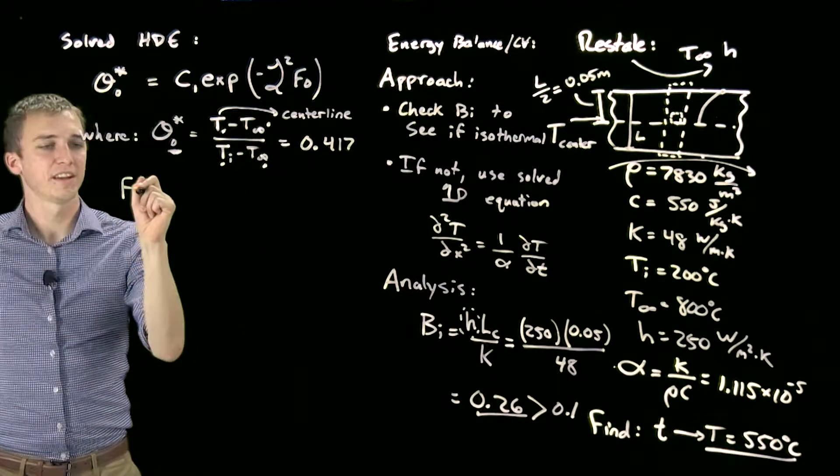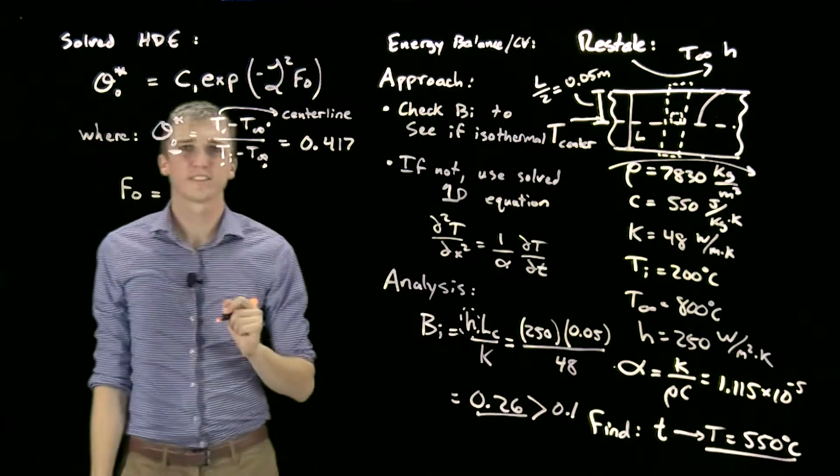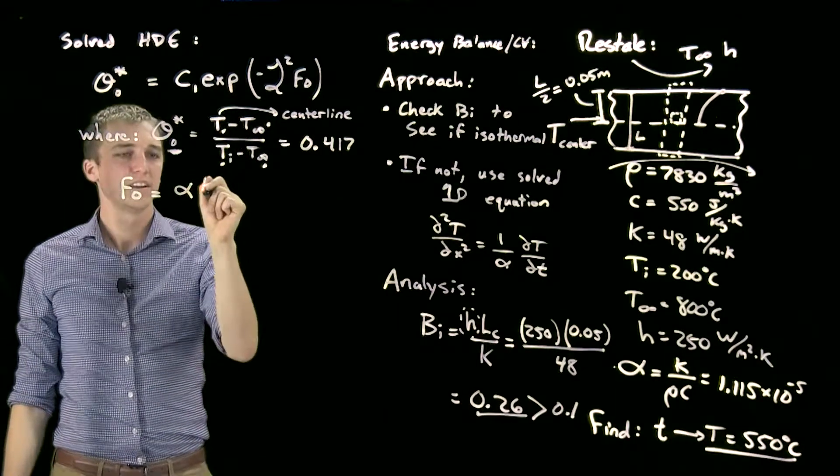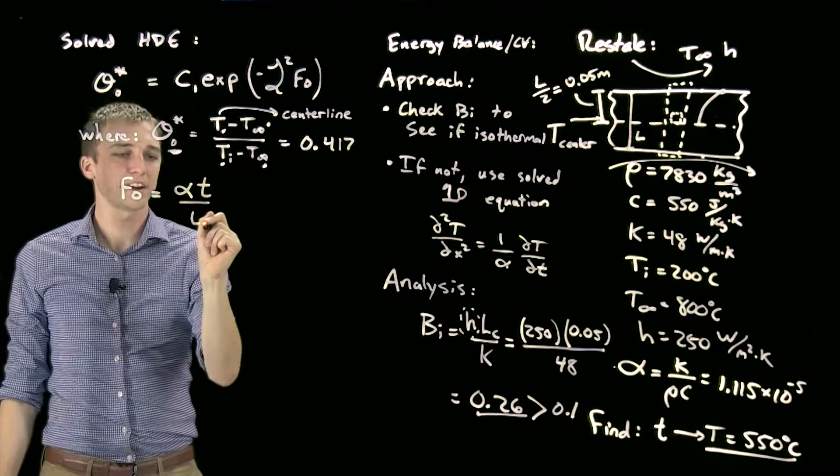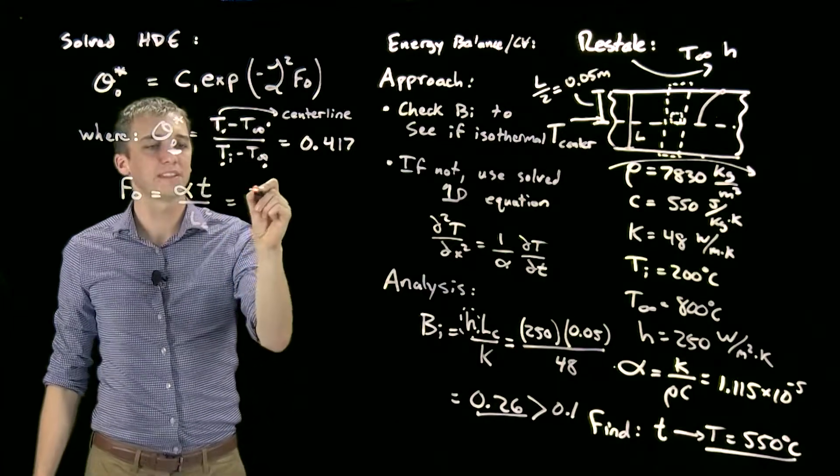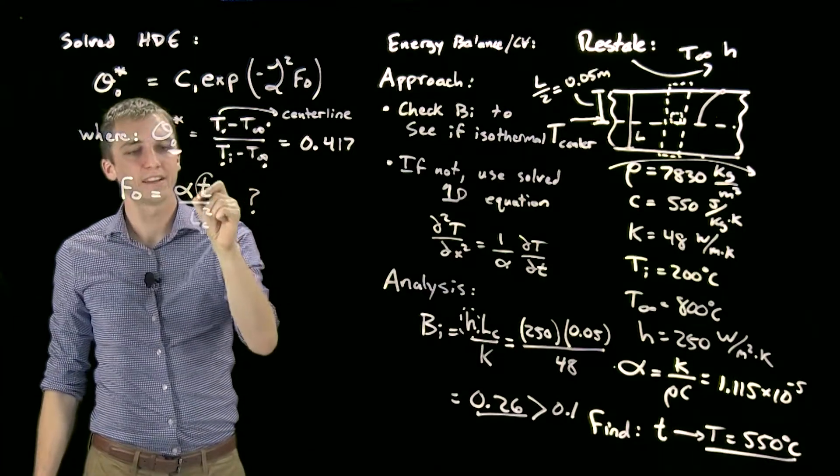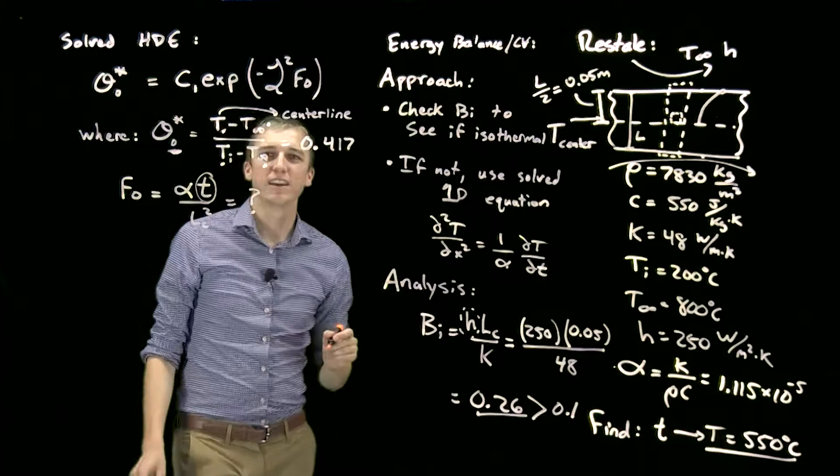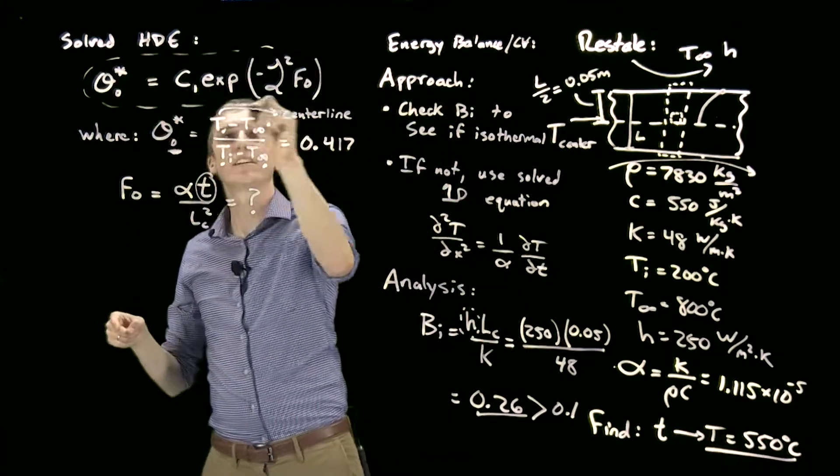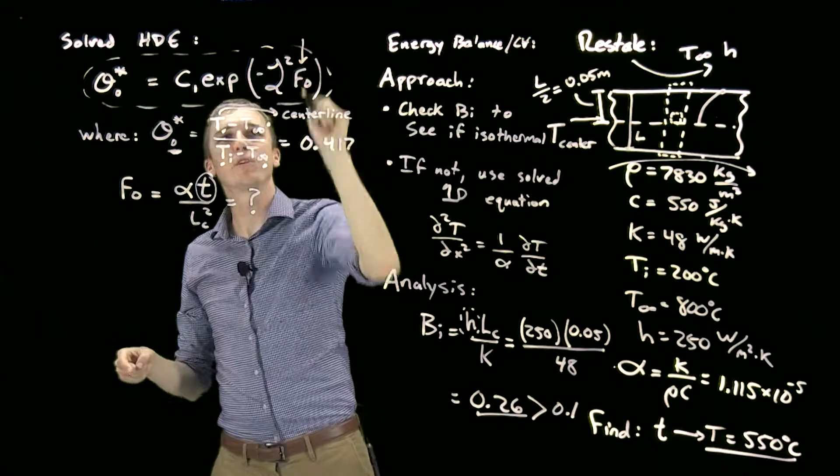We've defined this, and we also need to figure out what the Fourier number is. The Fourier number is defined as Fo = αt/L_c². We actually can't compute this yet because it has what we're looking for, t. Instead, we're going to solve this equation right here for the Fourier number, but we still need C₁ and our zeta.